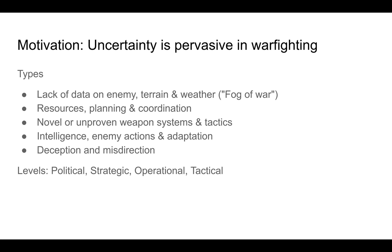Warfighting, like many other domains, has many sources of uncertainty. There is a lack of data on the enemy, the terrain, the weather — this is known as the fog of war. As a warfighter, you also don't have information about the resources that might be available, you don't have a detailed plan, and you don't know what other commanders are planning to do, even on your own side. There are coordination and communication challenges. You frequently need to use novel or unproven weapons and tactics. Your intelligence about the enemy is often incomplete, and moreover the enemy can adapt, change tactics, and use deception. This happens both at the strategic and political level and at the operational and tactical levels of analysis.